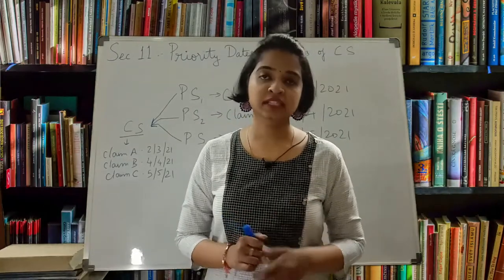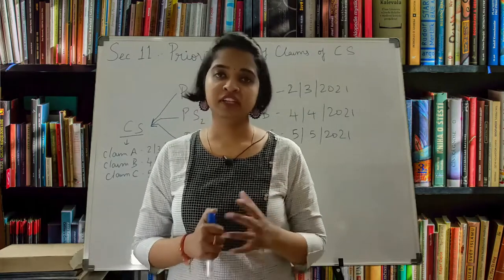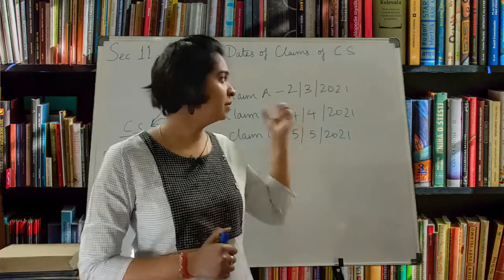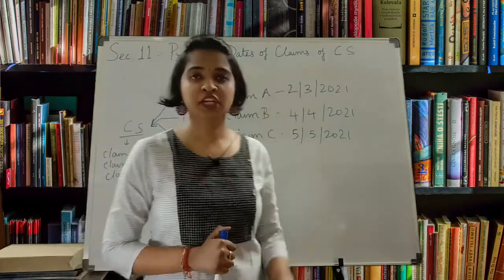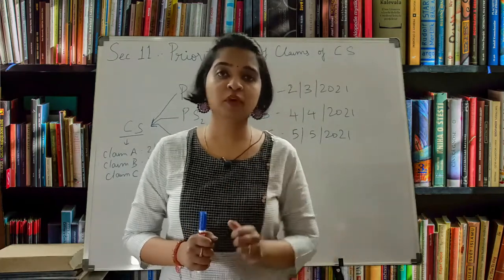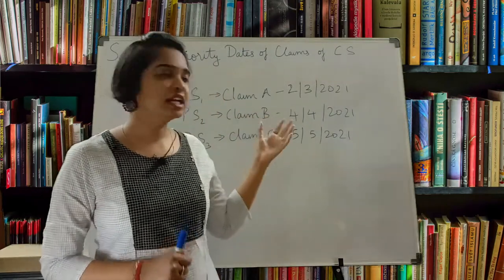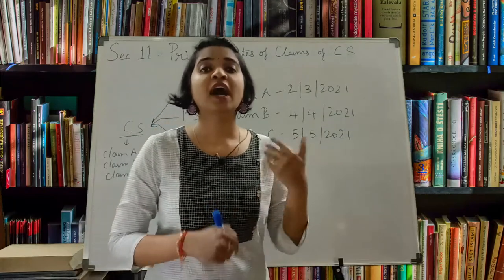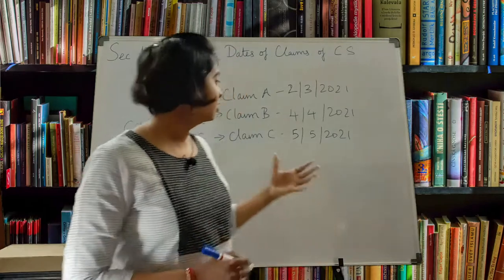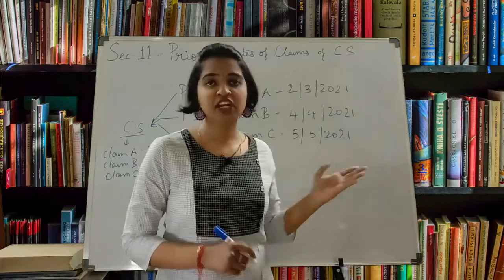Now let's see another scenario. In case you are filing a provisional specification for an invention - say Provisional Specification 1 mentioning Claim A, filed on 2-3-2021. Then you find more things and file another provisional specification mentioning Claim B, filed on 4-4-2021. Again, finding something new, you file Provisional Specification 3 mentioning Claim C, filed on 5-5-2021.